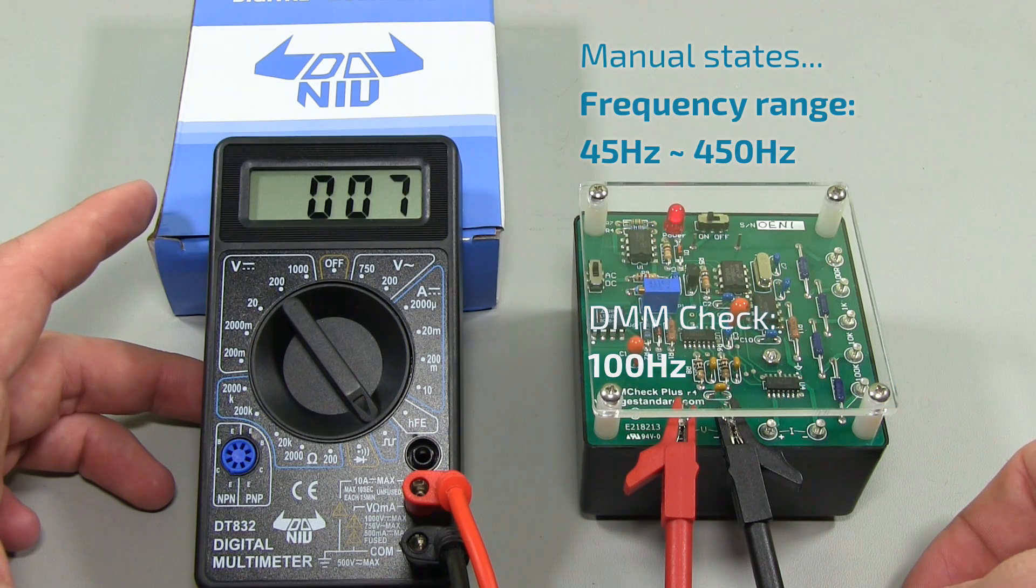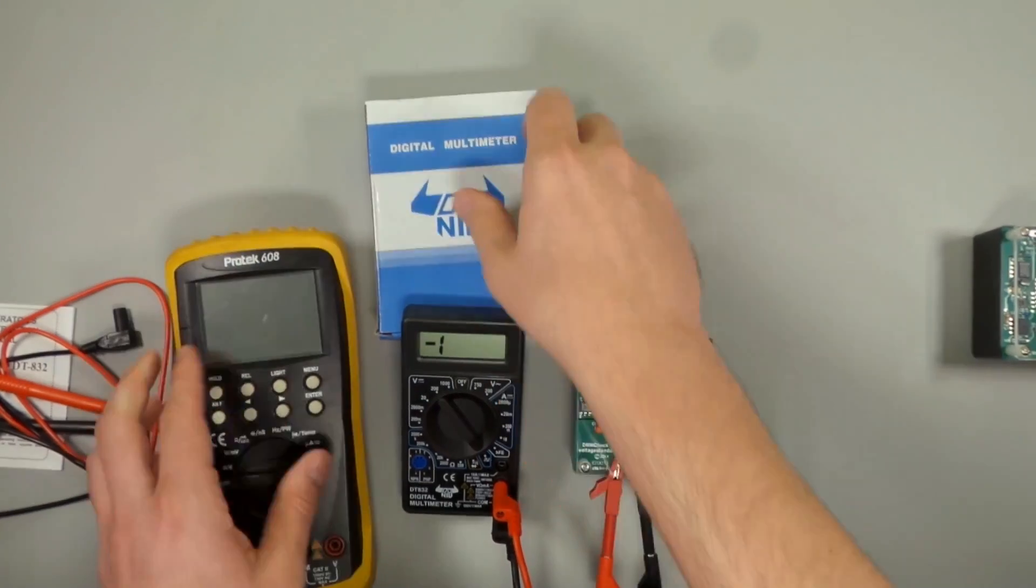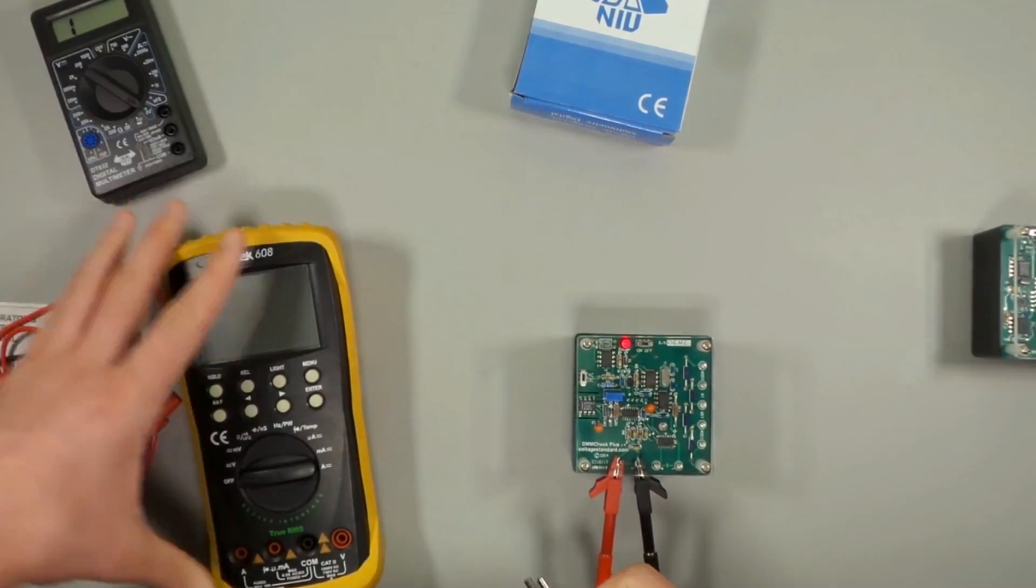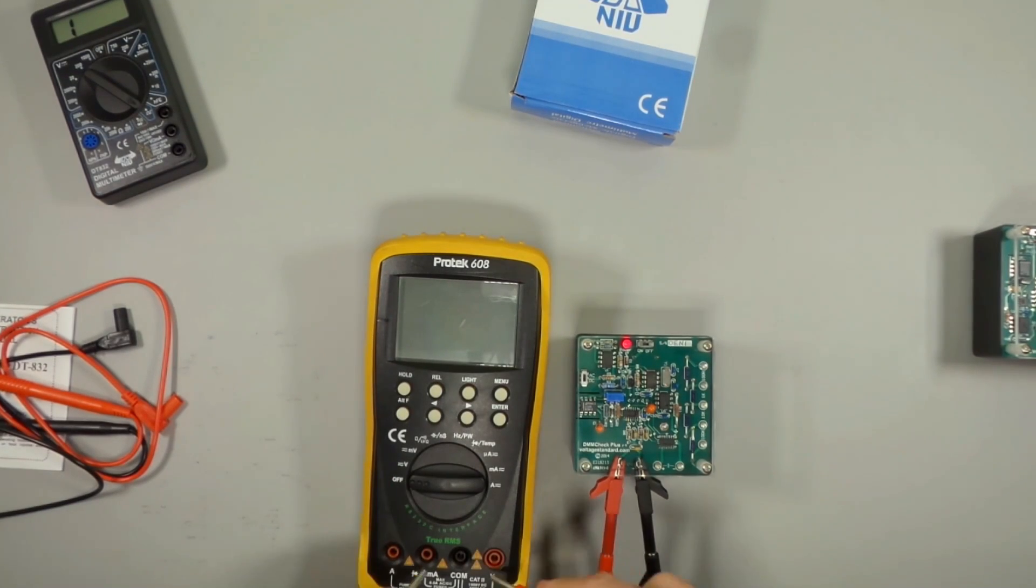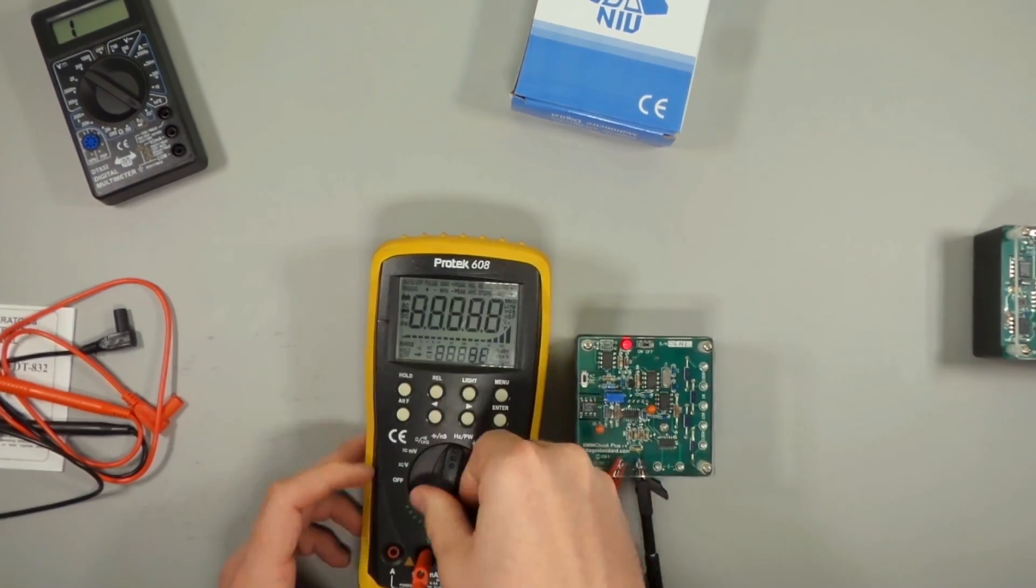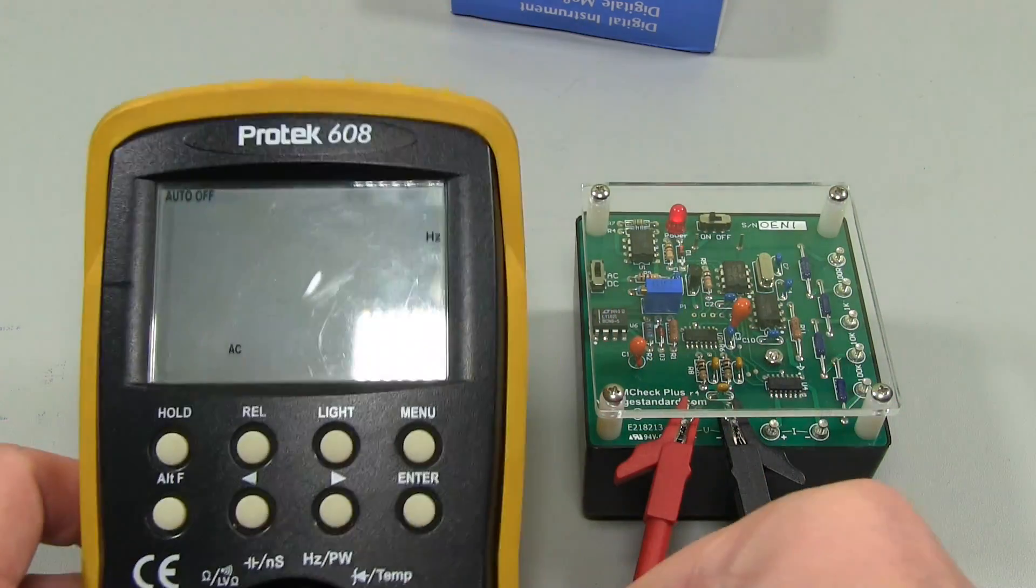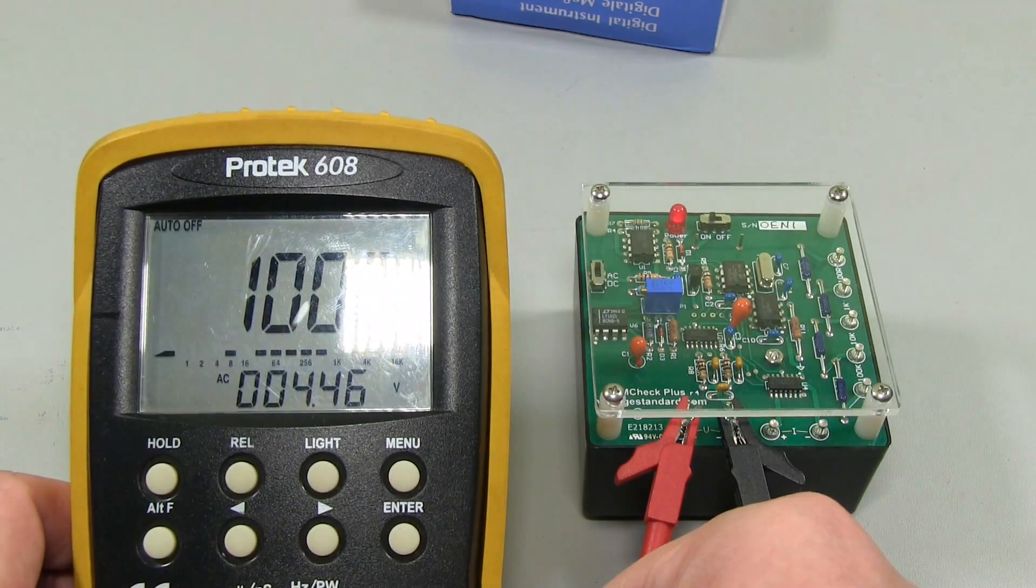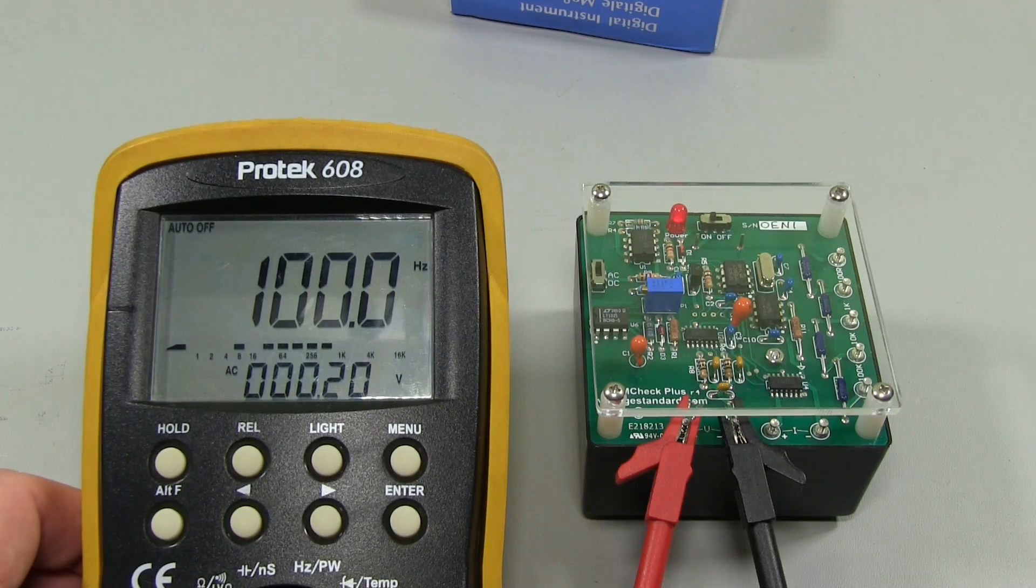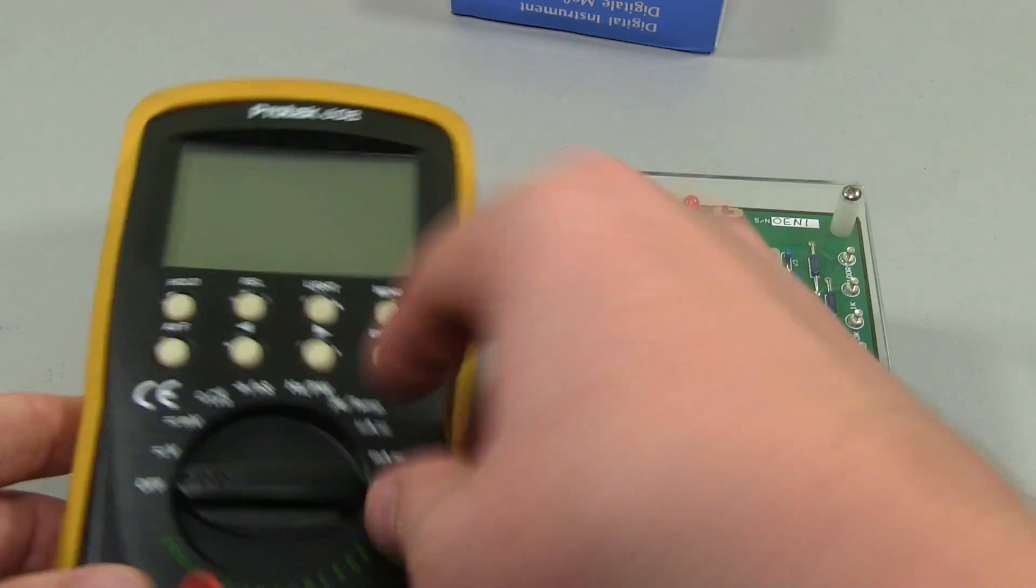So that's a bit of a fail. Just to give us an idea of what it should be reading, I'll unplug that and put my Protec in here and flip that over to frequency. 100 hertz exactly, as you can see there. Protec has no problems with that. This is actually a really good meter, it's one of my favorite benchtop meters.